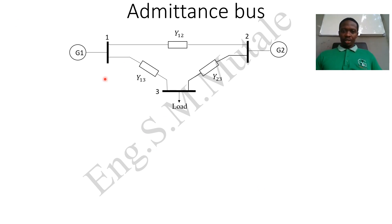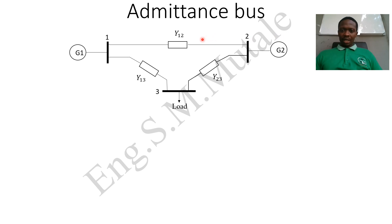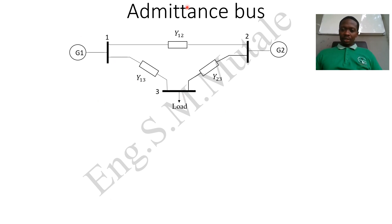In this load flow scenario, we have bus one, bus two, and bus three. Generator one (G1) is connected at bus one. The admittances representing transmission lines are: Y12 between bus one and bus two, Y23 between bus two and bus three, and Y13 between bus one and bus three.